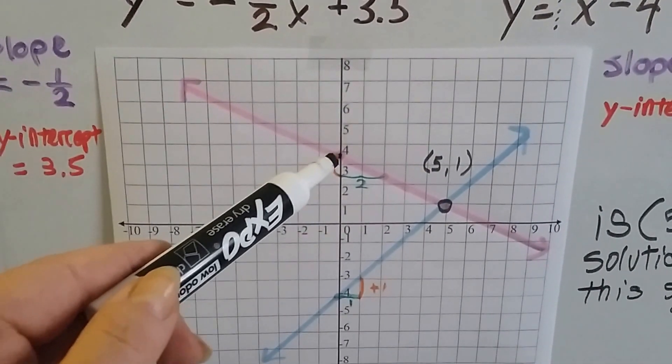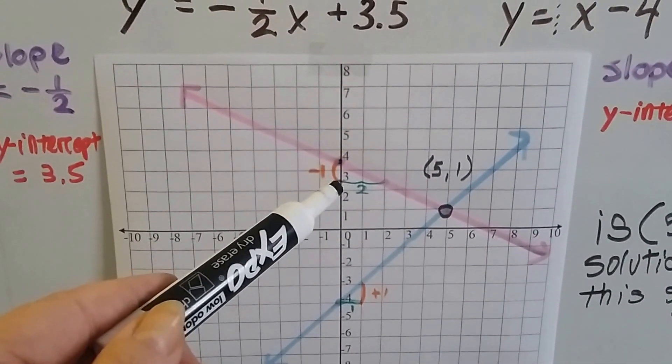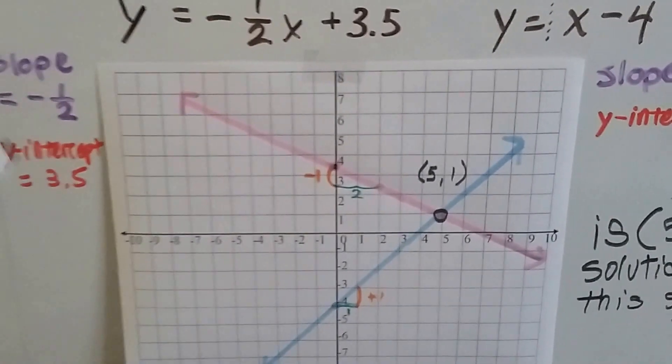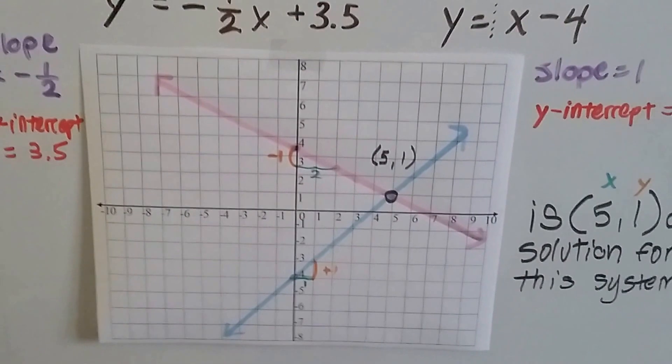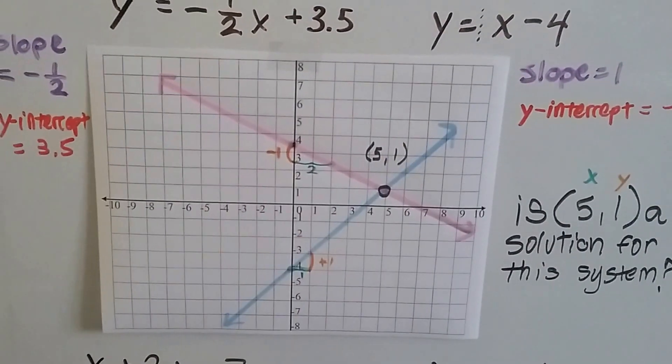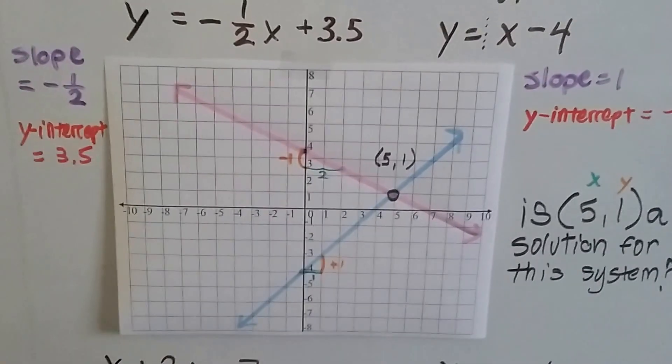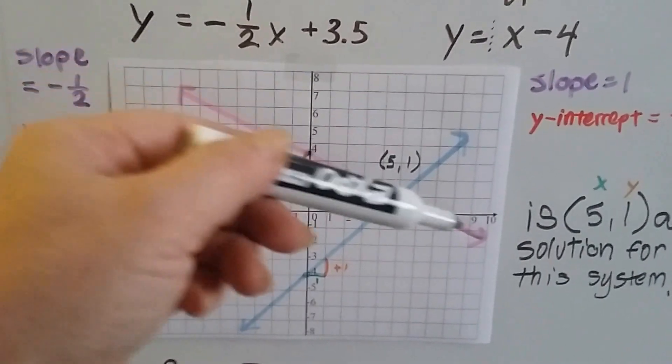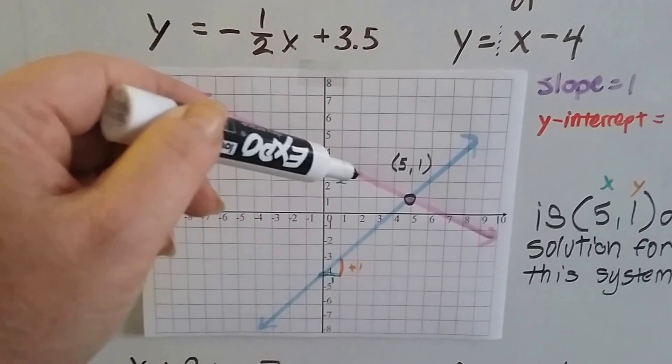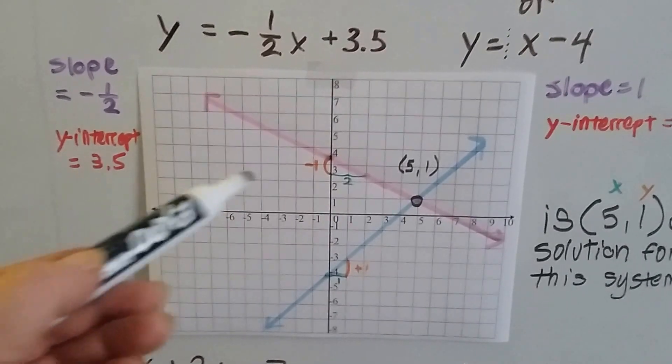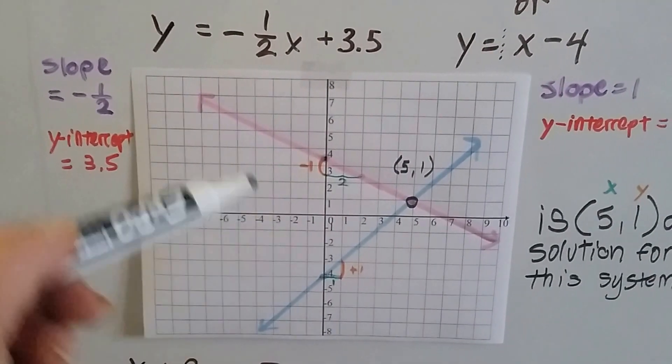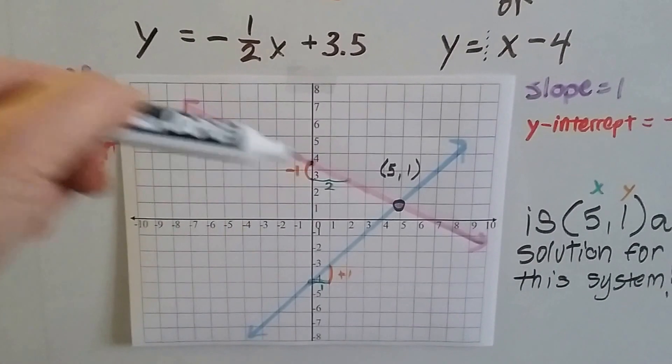So it's going to be a negative 1 rise with a 2 run. And because it's negative, we know it's going to fall to the right. Remember, if it's a positive slope, it rises to the right. And if it's a negative slope, it falls to the right. So we know that this one is going to fall to the right. It's going to go down 1 and over 2 as the slope. And the y-intercept is at 3.5 right here. So we know that's our line.